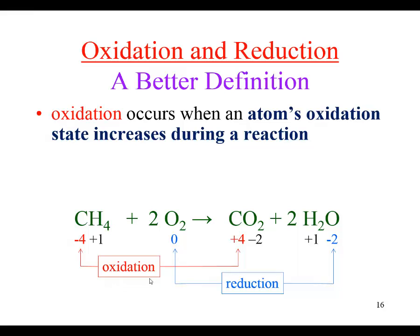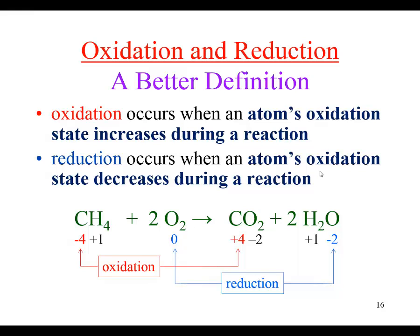Carbon in methane has an oxidation number of a negative four, going to a positive four in carbon dioxide. Since the oxidation number is increasing, the carbon is being oxidized - carbon loses electrons in this oxidation process. Oxygen's oxidation state decreases from zero to a negative two when it's reduced, meaning it's gaining electrons.